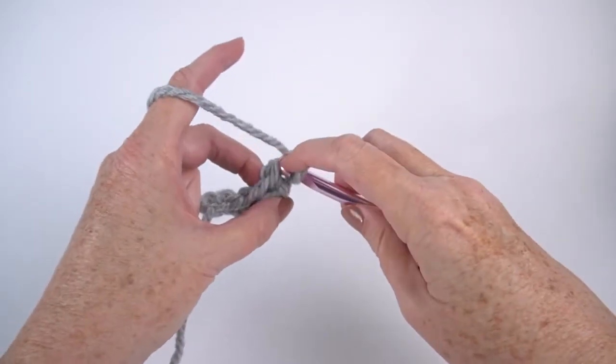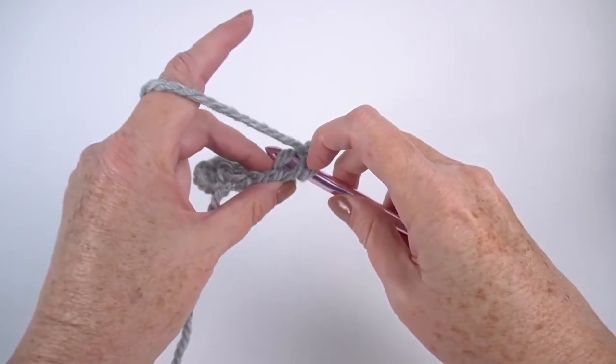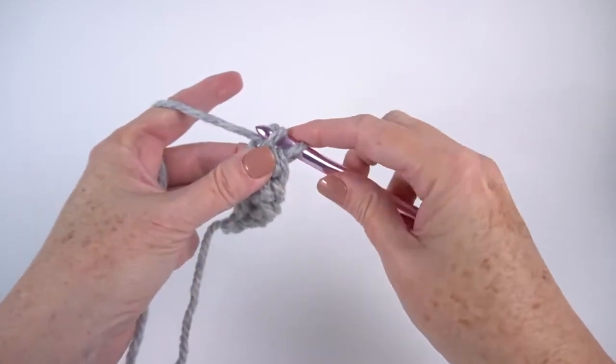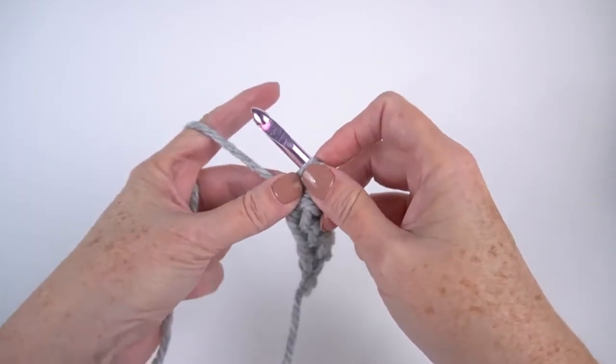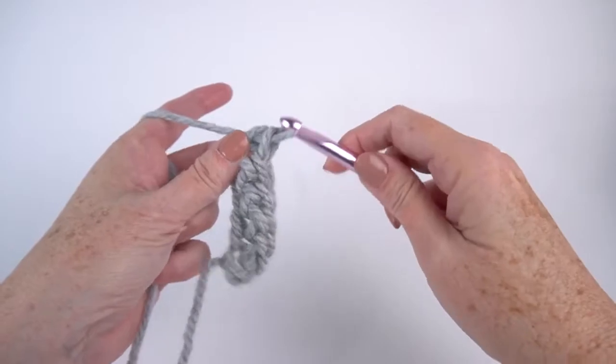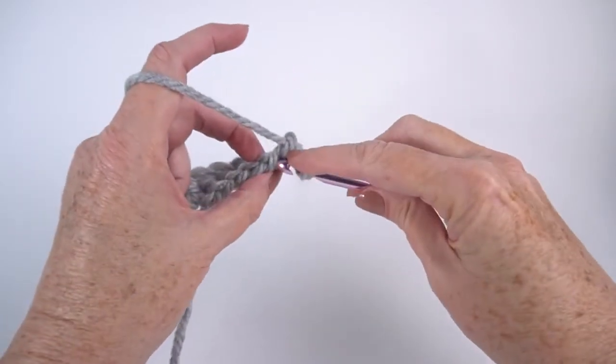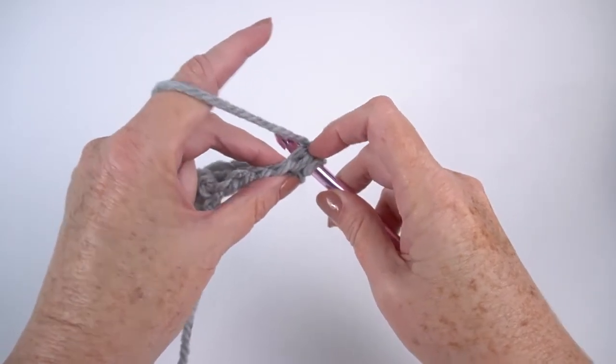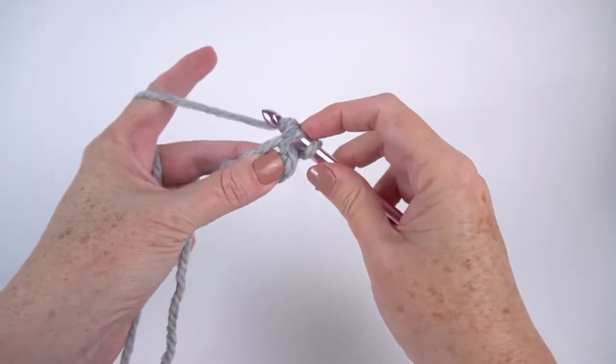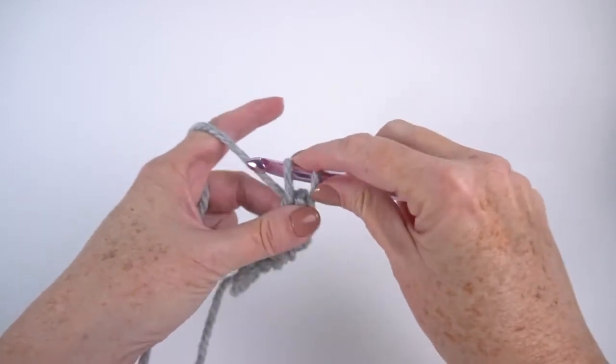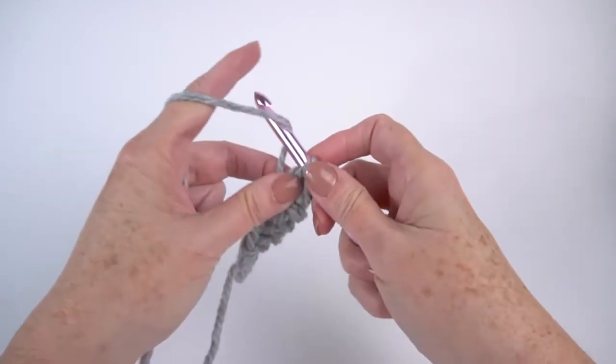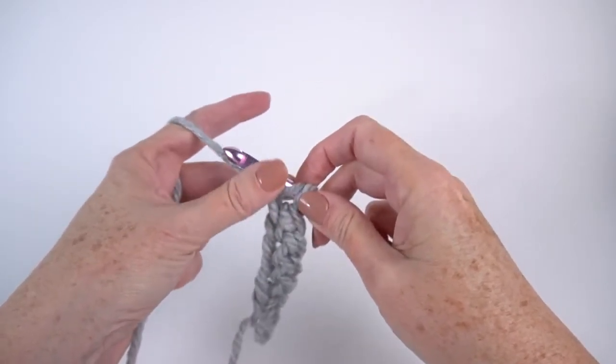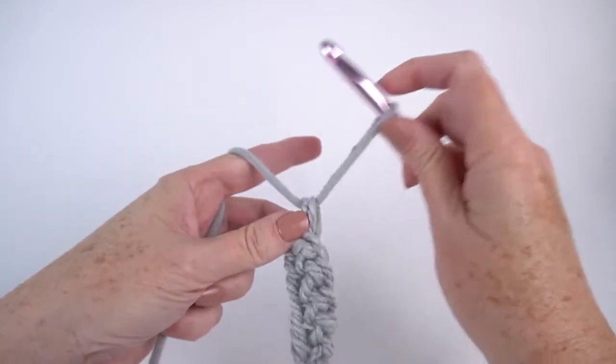Back to the bottom. Under those two legs. Yarn over, draw up a loop. Chain one. Yarn over, draw through two. Finish that single. Let's do that one more time. Under both legs of that chain that is underneath. Yarn over, draw up a loop. Two loops on your hook. Chain one, which is yarn over and draw through just that one loop. And then finish your single by yarning over and drawing through two.